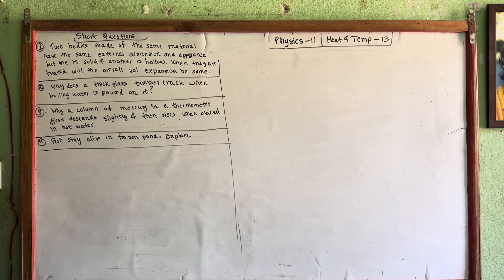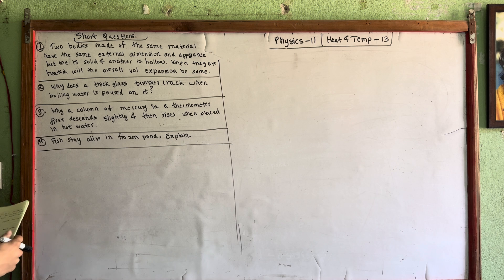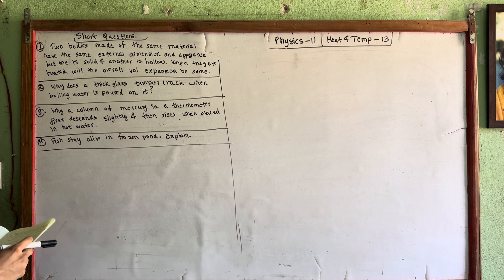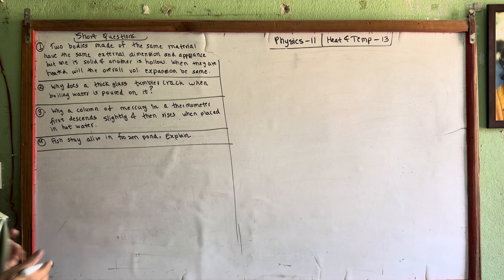Number 1. Two bodies made up of the same material have the same external dimensions and appearance, but one is solid and another is hollow. When they are heated, will the overall volume expansion be the same?